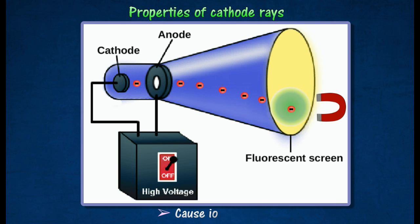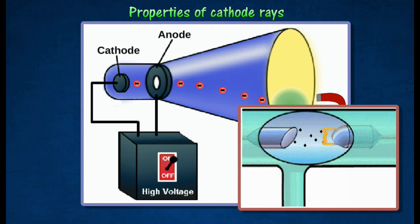They also cause ionization while passing through air or gases. When they bombard a metallic target such as tungsten, X-rays are produced.